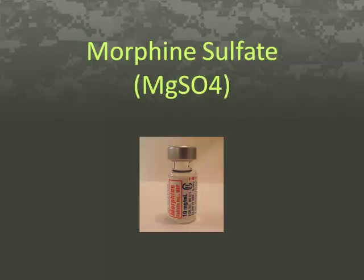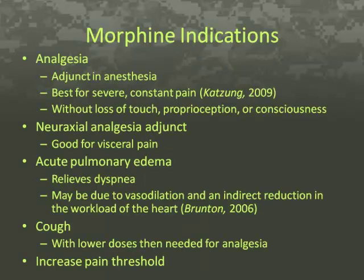Morphine sulfate is a medication used as an adjunct in anesthesia for analgesia. It is best for severe constant pain as it increases the pain threshold, producing its effects without loss of touch, proprioception, or consciousness. It is a neuraxial analgesia adjunct and can provide analgesia for up to 24 hours. It also relieves dyspnea associated with acute pulmonary edema and has implications in the relief of severe cough.